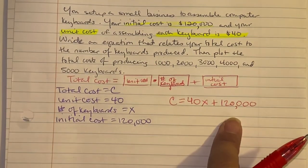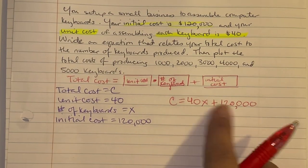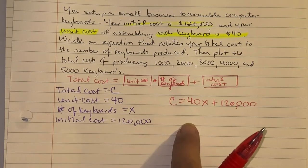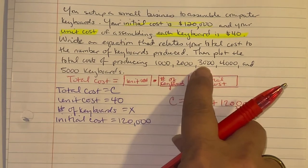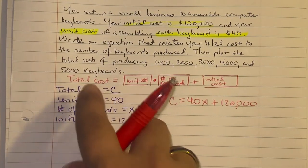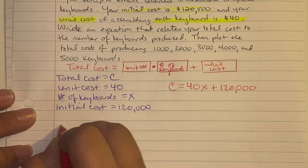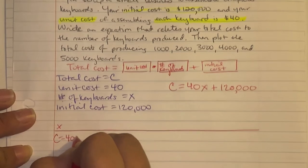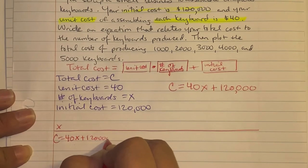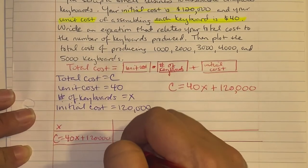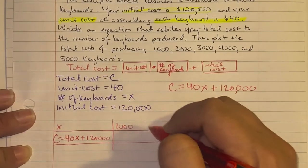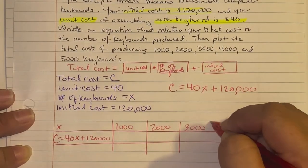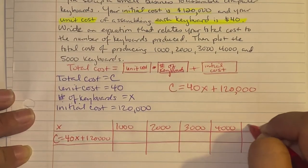They want us to find the total cost of producing 1,000, 2,000, 3,000, 4,000, and 5,000 keyboards. These are our x-values. We'll set up a table and plug each value into our equation.